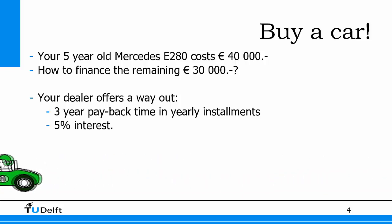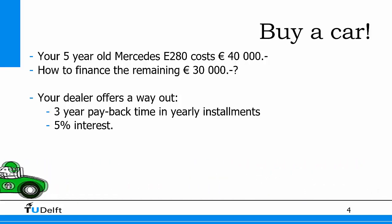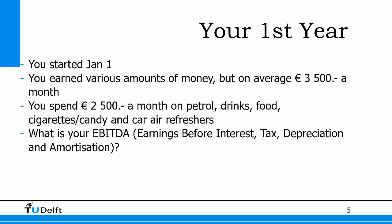Off you go — you travel for a year back and forth with your taxi and you make a lot of money, at least to your experience. Starting January 1st, you earned various amounts but on average about three and a half thousand euros a month. However, you spent about two and a half thousand euros a month on petrol, drinks, food, cigarettes, air refreshments, and other things you need for your car.